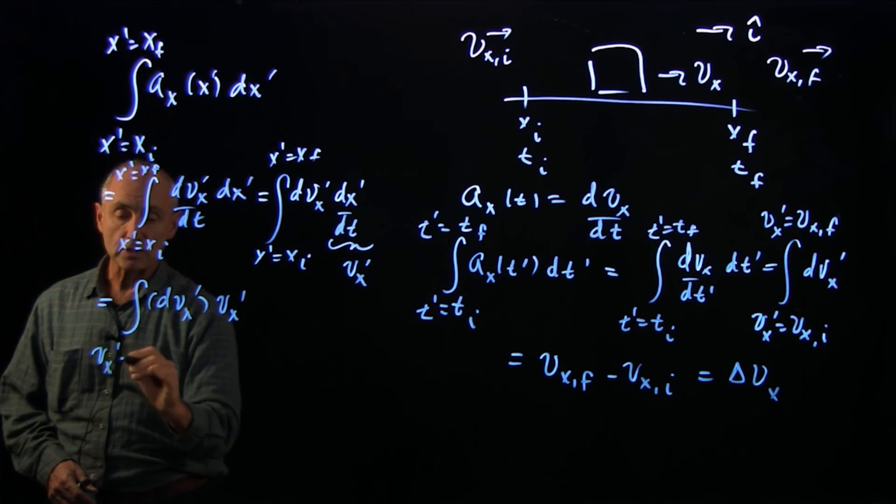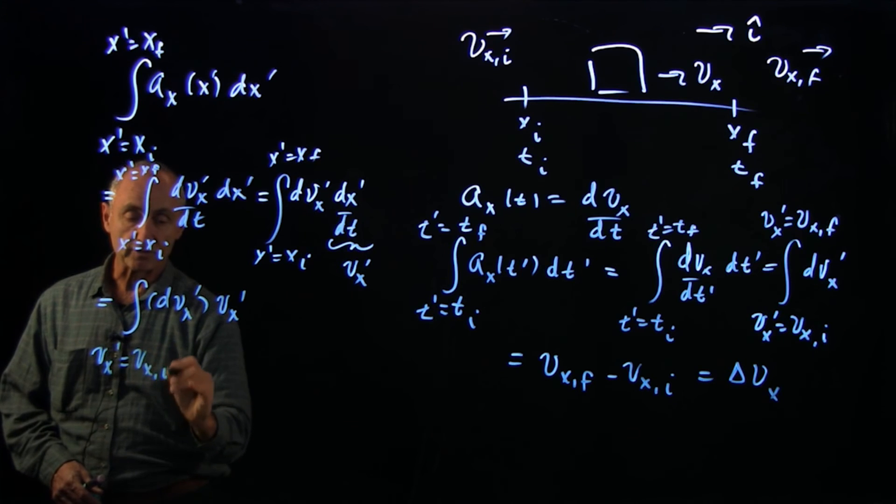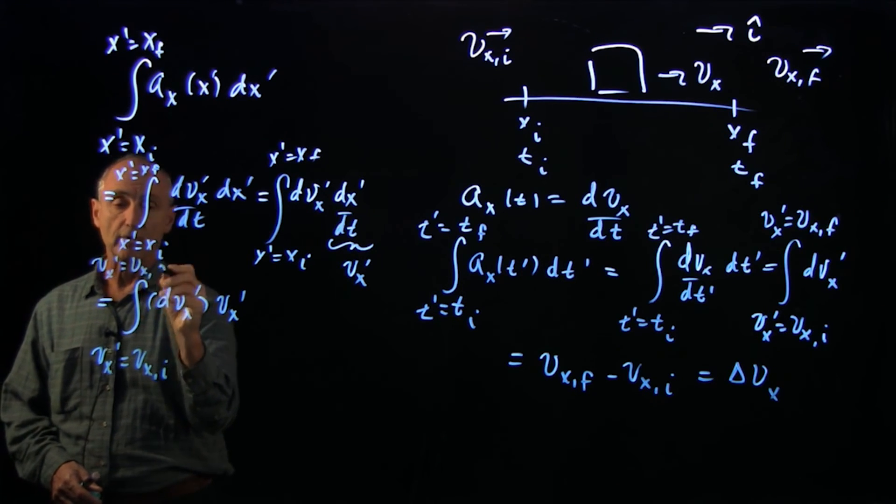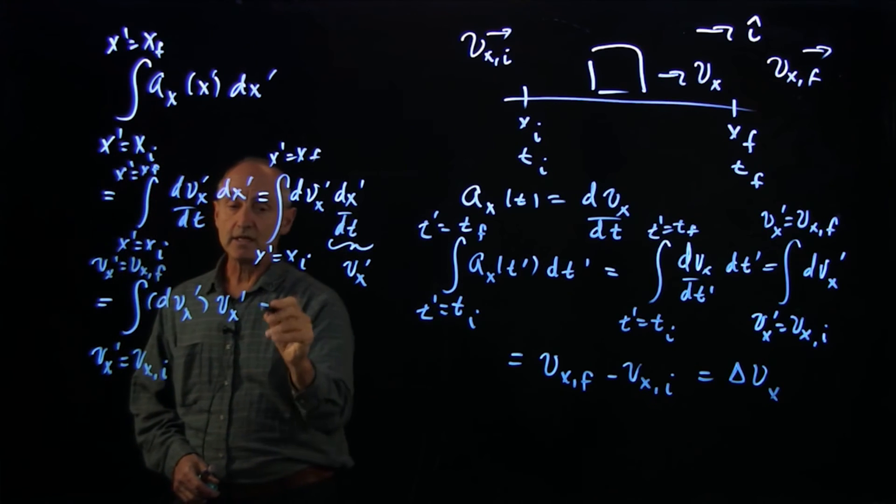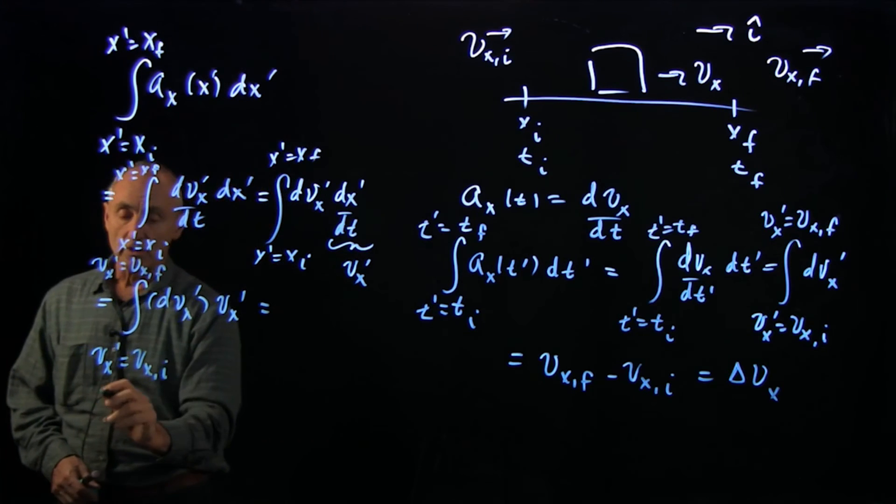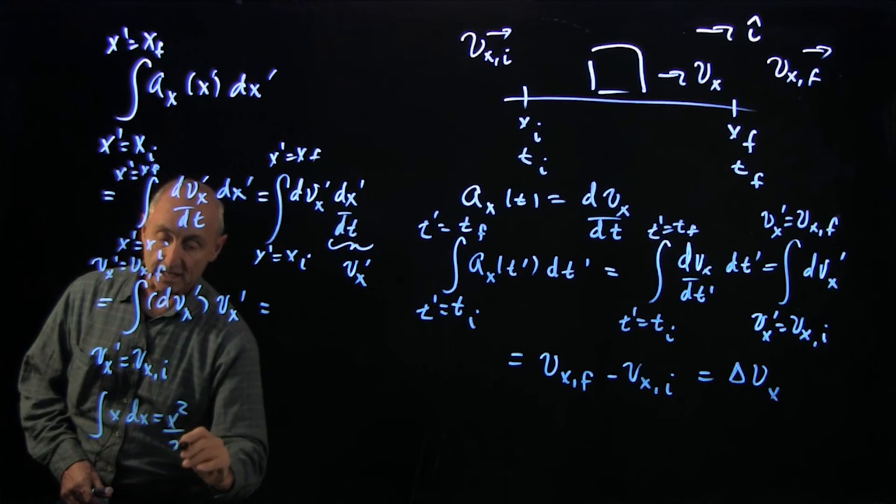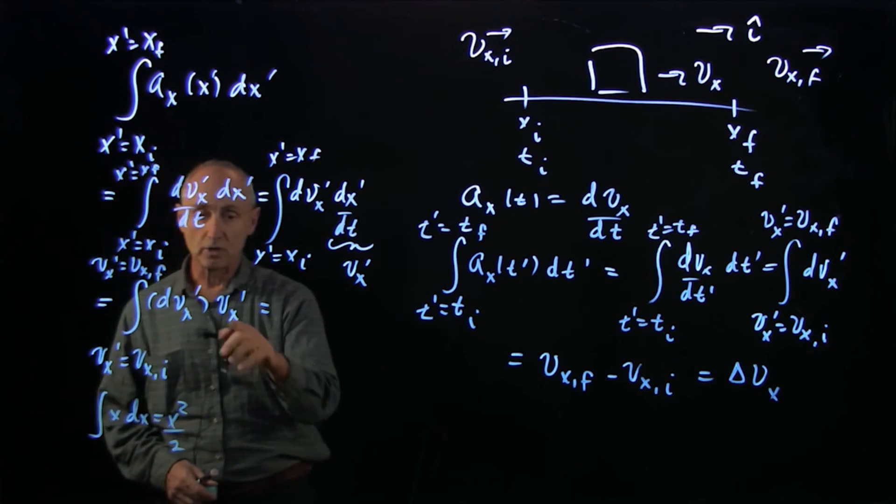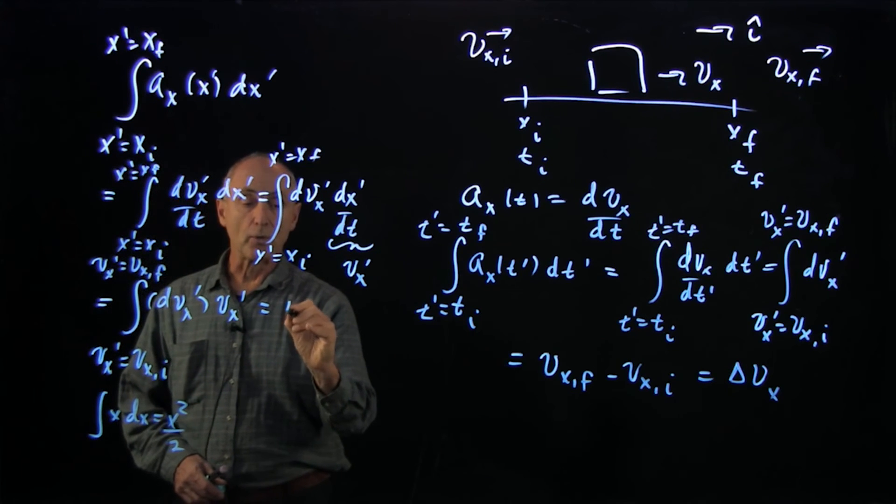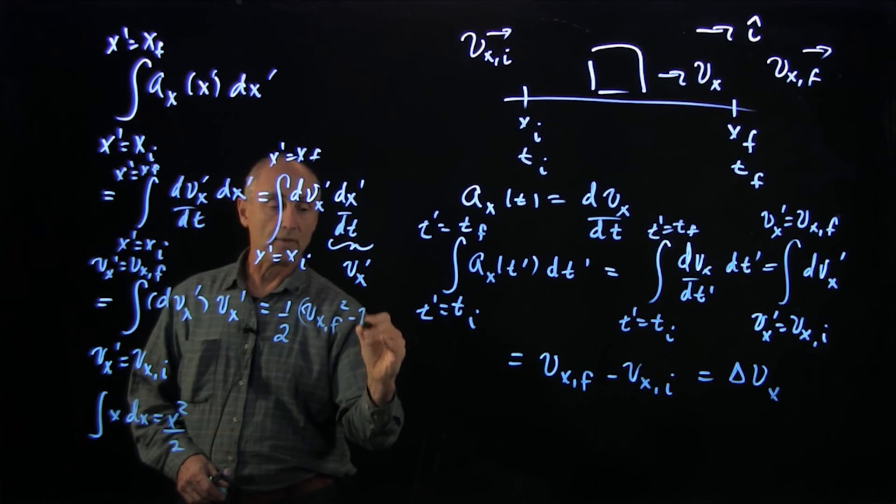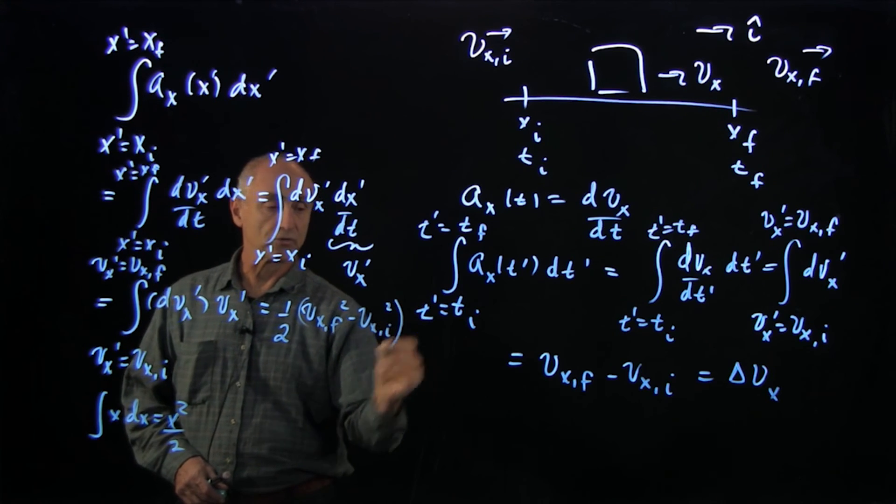And now our new integration variable is going from some initial value to some final value. Once again, this is a straightforward integral. For those who haven't seen integrals like this, it's just something like x dx is x squared over 2, but our integration variable is vx prime. So what we get is 1/2 vx_final squared minus vx_initial squared.